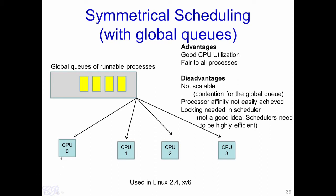The drawback of the global queue scheme comes from the fact that a single queue is shared among various processors. We could reach a state where two processors query the queue at exactly the same time and pick exactly the same process to execute, meaning a single process may execute simultaneously in two different CPUs. To prevent this, access to the queue must be serialized — if CPU 0 wants to access the queue, no other CPU should be able to access it at that time. This serialization is achieved through a technique known as locking.